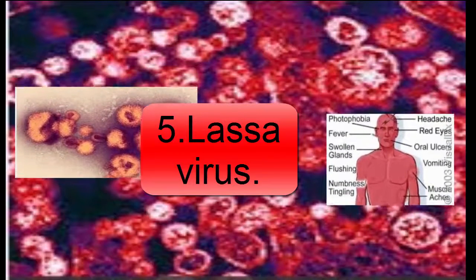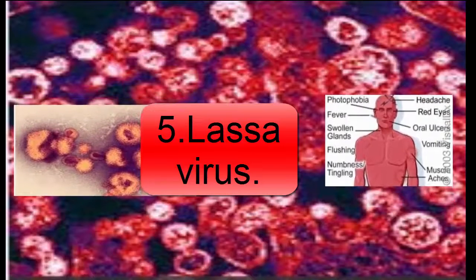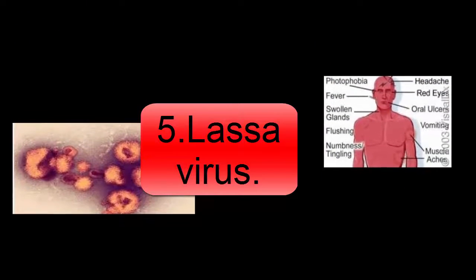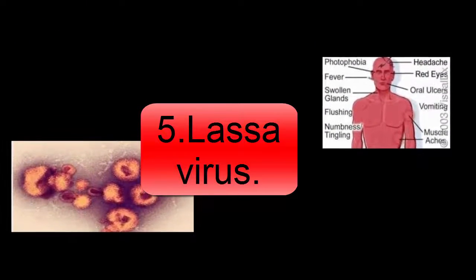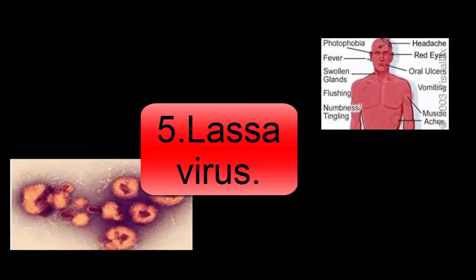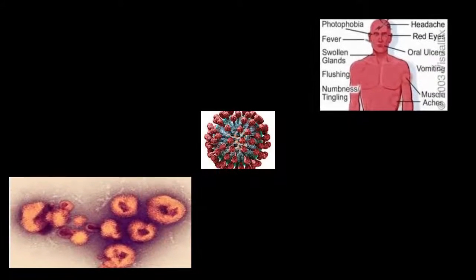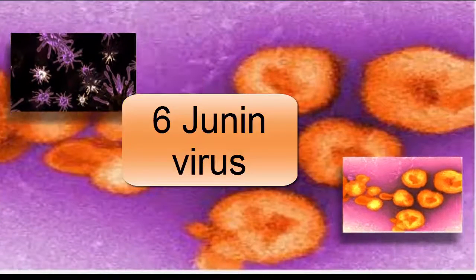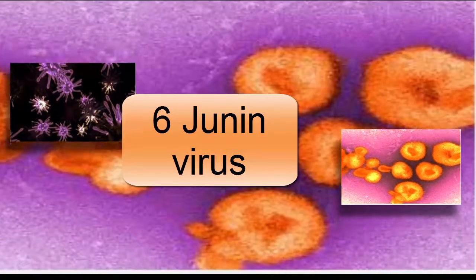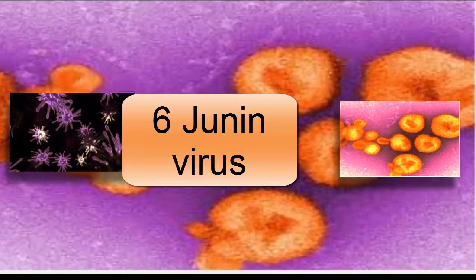The Lassa virus is transmitted by rodents. Cases can be endemic, meaning the virus occurs in a specific region such as Western Africa and can reoccur there at any time. Number six: the Junin virus is associated with Argentine hemorrhagic fever.